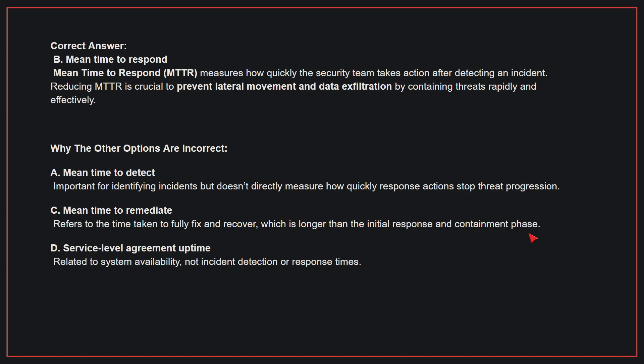Reducing MTTR is crucial to prevent lateral movement and data exfiltration by containing threats rapidly and effectively. Why the other options are incorrect? A. Mean time to detect is important for identifying incidents but doesn't directly measure how quickly response actions stop threat progression. C. Mean time to remediate refers to the time taken to fully fix and recover, which is longer than the initial response and containment phase. D. Service level agreement uptime is related to system availability, not incident detection or response times. Therefore, the correct answer is B.